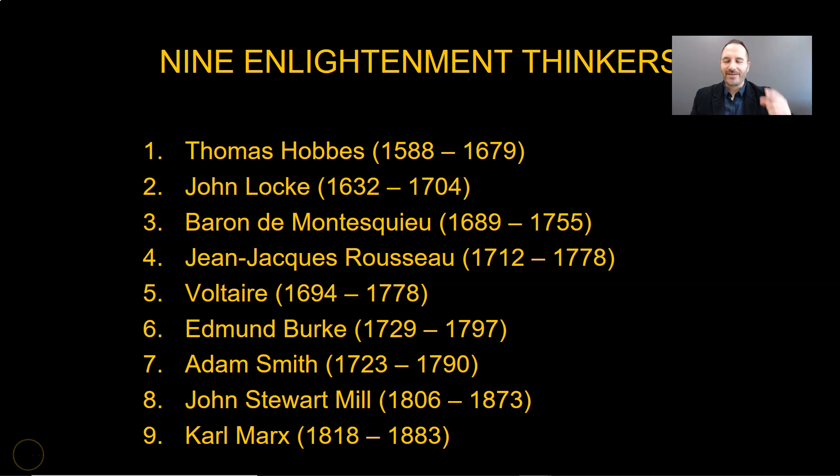All right, folks, here we go. Yet another philosopher. We've looked at a bunch already — we've covered Hobbes, Locke, Montesquieu, Rousseau, Voltaire, and Edmund Burke. We're going to do Smith and Marx after, so we're actually going to switch up a bit, and we're going to do John Stuart Mill today.